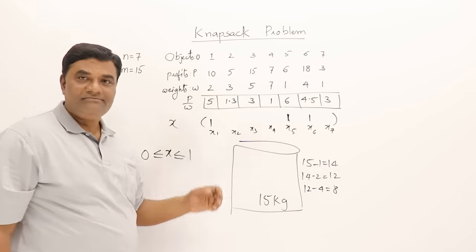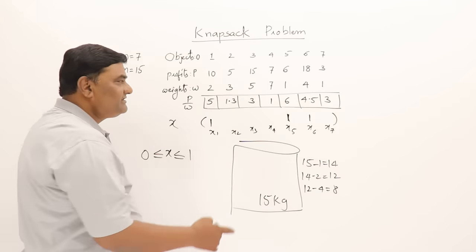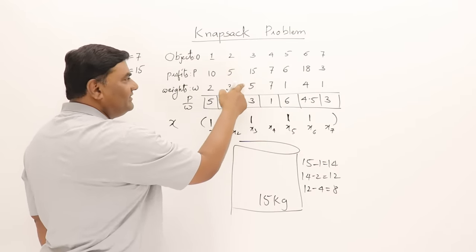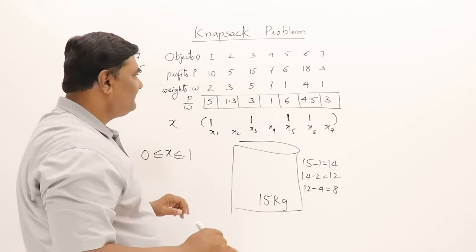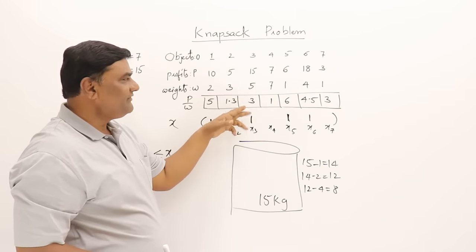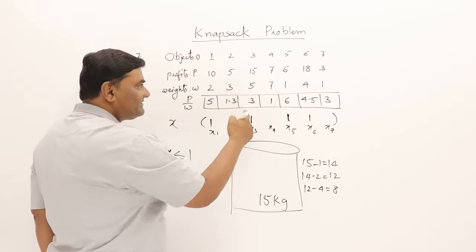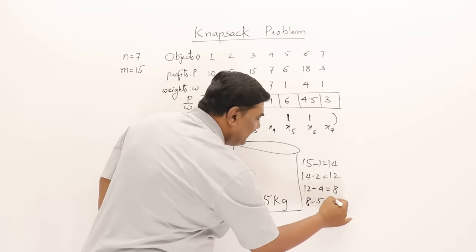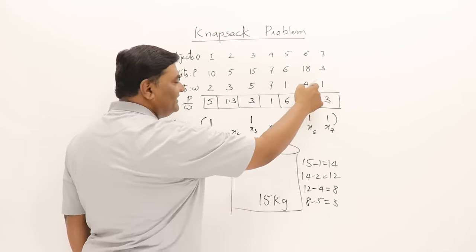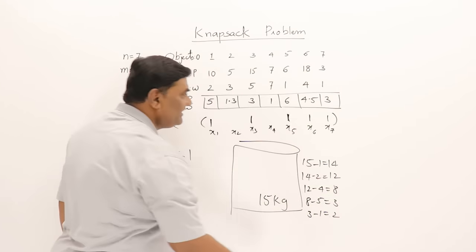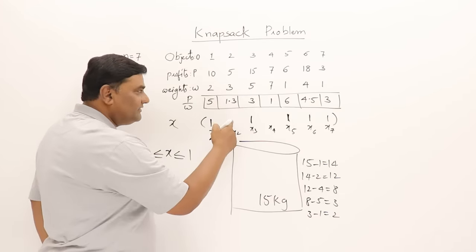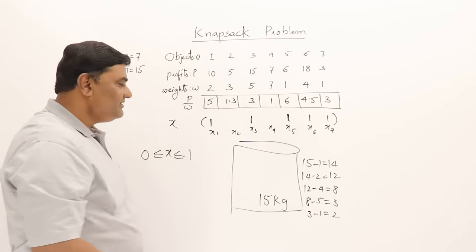Next, two objects are tied at profit-per-weight ratio of 3. I select one of them — a 5 kg object giving profit 15. That leaves 8 − 5 = 3 kg remaining. Next I include a 1 kg object, leaving 2 kg. Then the next object has weight 3 kg, but I only have 2 kg of space remaining.